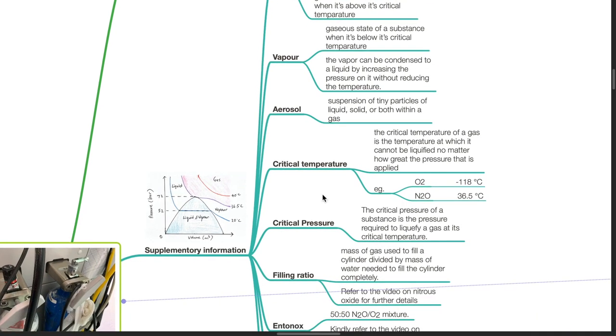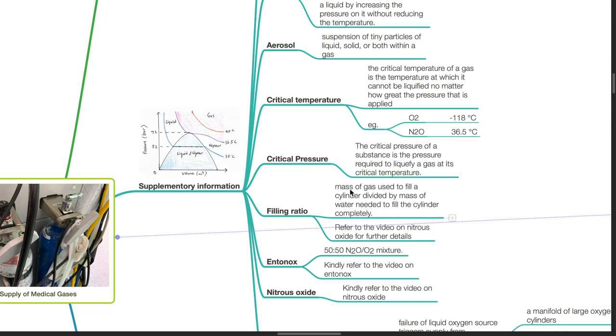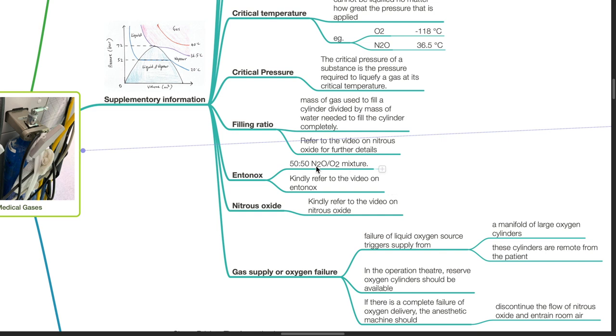Critical pressure: The critical pressure of a substance is the pressure required to liquefy a gas at its critical temperature. Filling ratio is the mass of gas used to fill a cylinder divided by mass of water needed to fill the cylinder completely. Refer to the video on nitrous oxide for further details. Entonox is a mixture of 50% nitrous oxide and 50% oxygen.